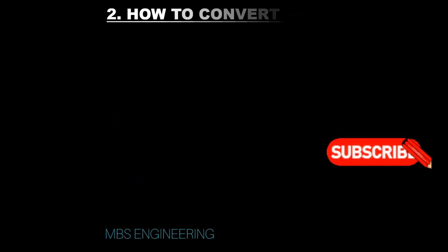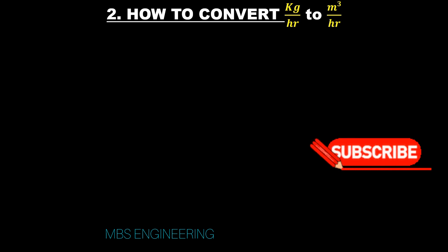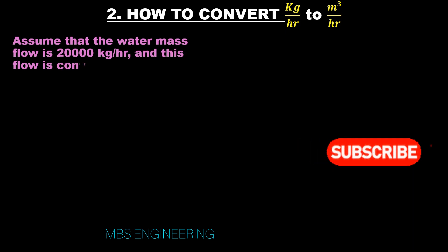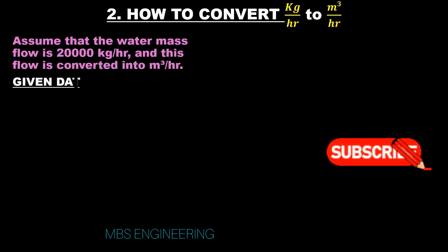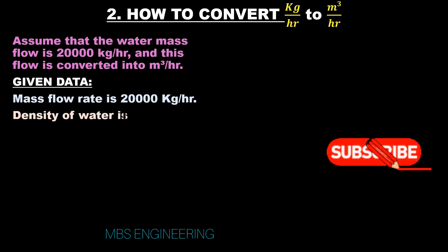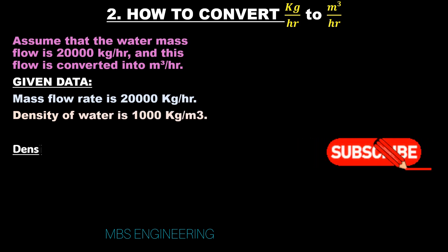We will understand and learn how to convert kilogram per hour to meter cube per hour. Assume that the water mass flow is 20,000 kilogram per hour, and this flow is converted into meter cube per hour. Given data: mass flow rate is 20,000 kilogram per hour, and density of water is 1,000 kilogram per meter cube.